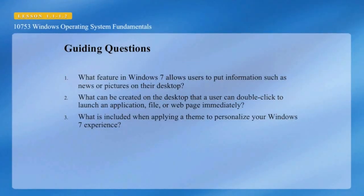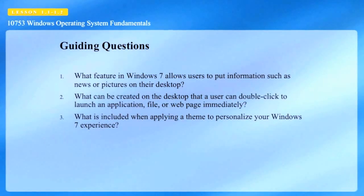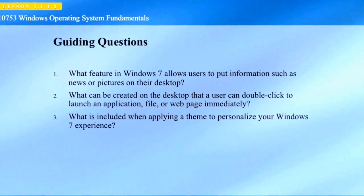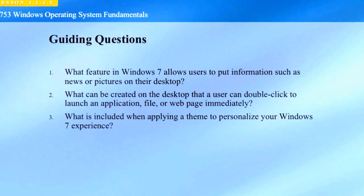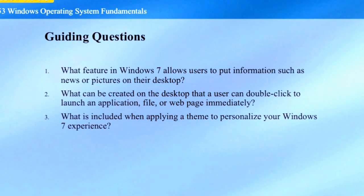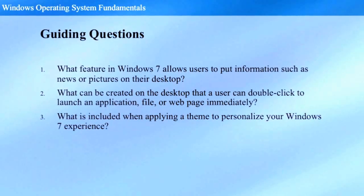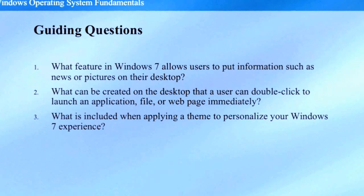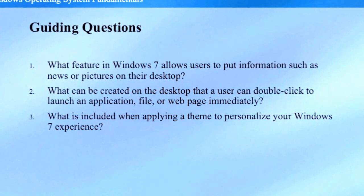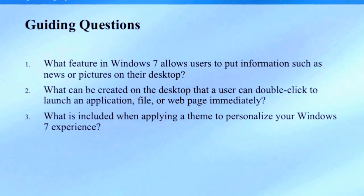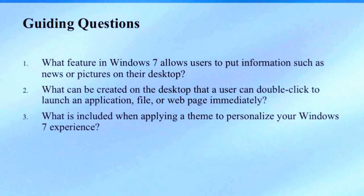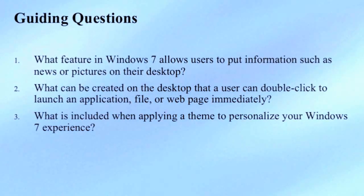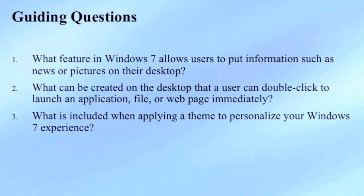Here are some questions to consider while watching the video. What feature in Windows 7 allows users to put information such as news or pictures on their desktop? What can be created on the desktop that a user can double-click to launch an application, file, or webpage immediately? And what is included when applying a theme to personalize your Windows 7 experience?